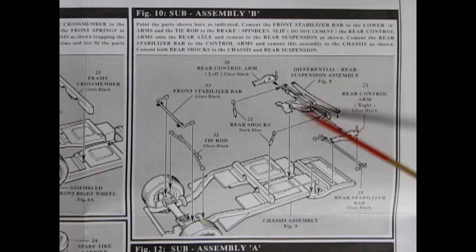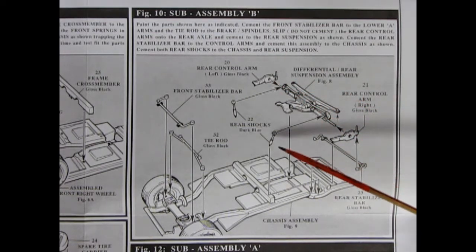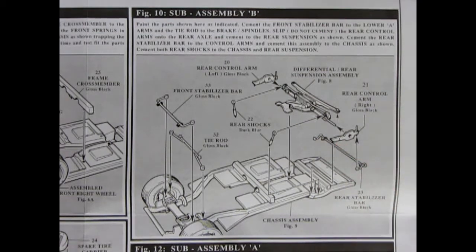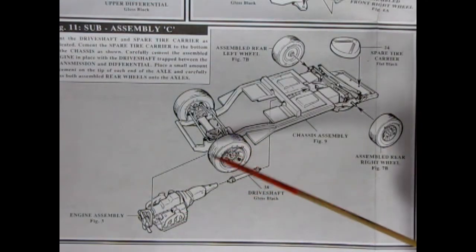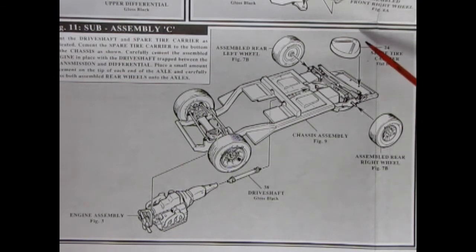Sub assembly B completes the front of our chassis and gets us going on the back by adding in the front stabilizer bar and our tie rod. Now I do believe these wheels are fully poseable, so that's always fun. Then we've got our rear differential and suspension assembly. You got our right and left control arms, rear stabilizer and our shocks, and again all of this attaches to the chassis assembly. Chassis sub assembly C is very straightforward. All we need to do is add our rear wheels to the back, put our drive shaft in, and the assembled engine and it all drops into the front of the chassis, and then followed off by our spare tire carrier which glues onto the back.